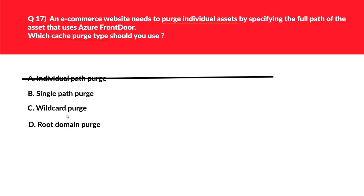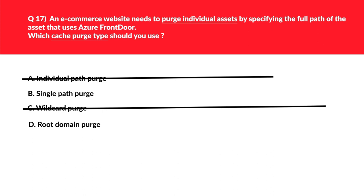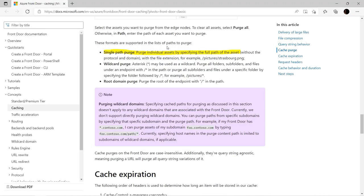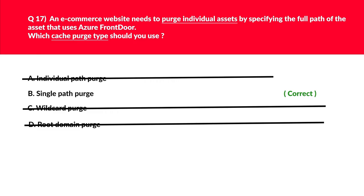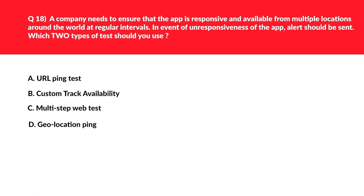Option D, root domain purge, uses a forward slash in the path and cannot purge individual assets. Quick tip: whenever you see 'purge individual assets,' single path purge should come to mind. Per official documentation, single path purge specifies the full path of the asset; wildcard uses asterisk; root domain purge uses slash. We lock option B, single path purge, as the correct answer.